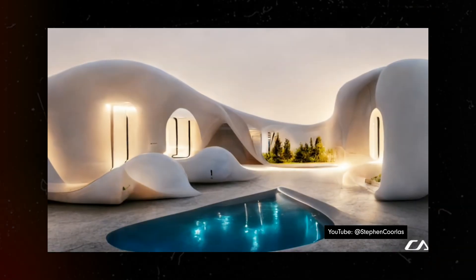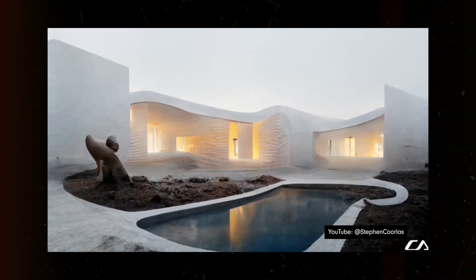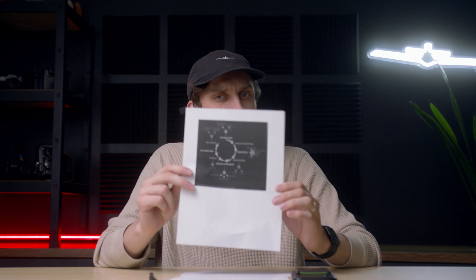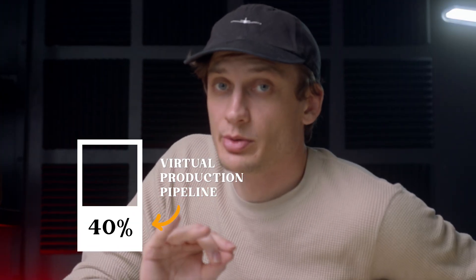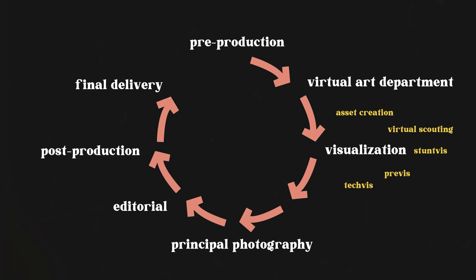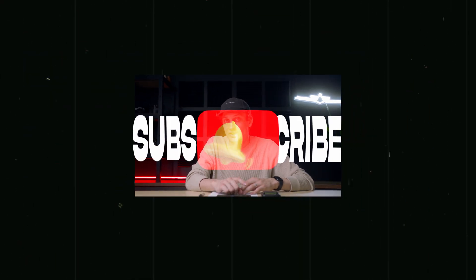Embracing the power of AI may usher in a new era of efficiency in virtual production. This is the current virtual production pipeline — pre-production, visual art department, visualization, pre-vis, editorial — this takes up about 40% of the virtual production pipeline. As everyone always says in virtual production: fix it in pre, not fix it in post. What takes the longest and allocates the most resources on every virtual production set? Making the environments. And if we cut down on this, I can only imagine where virtual production goes next.